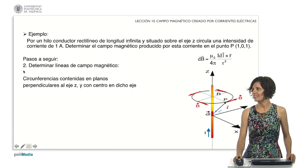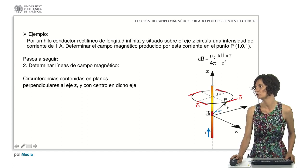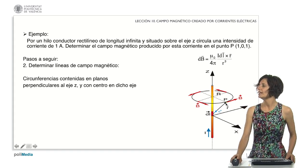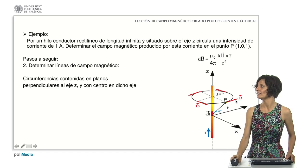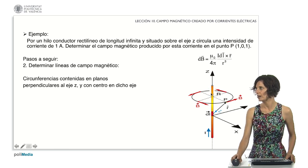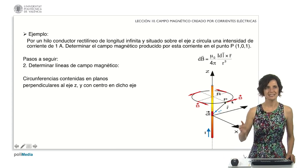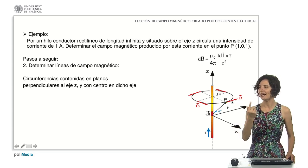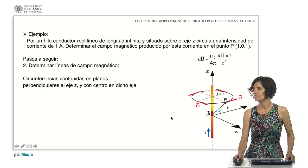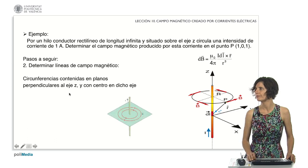Next, we move on to step 2: determining the magnetic field lines. Upon examining a current element and visualizing the field it generates at point P using the right-hand rule, we observe that the magnetic field at this point is parallel to the xy-plane. If we shift point P along the concentric circumference with the wire, the magnetic field's magnitude would remain constant, but the direction would alter, consistently tangent to the curve. Hence, the field lines manifest as circles residing within planes perpendicular to the z-axis and centered on that axis, as it appears on the screen.